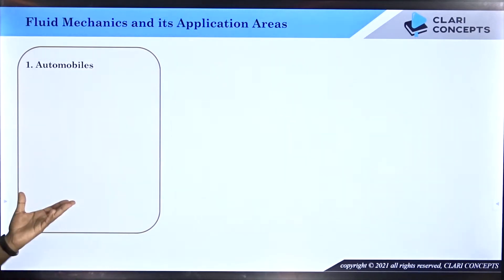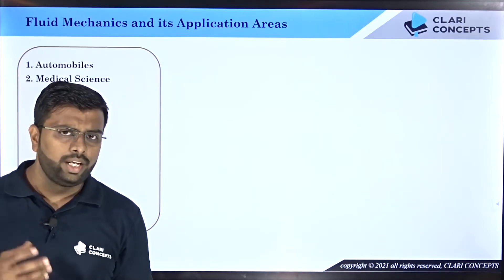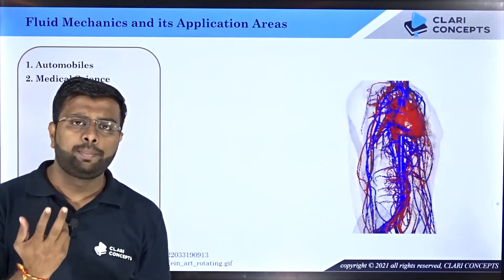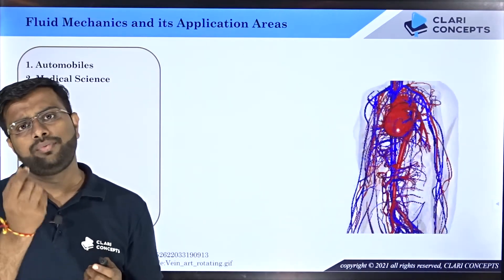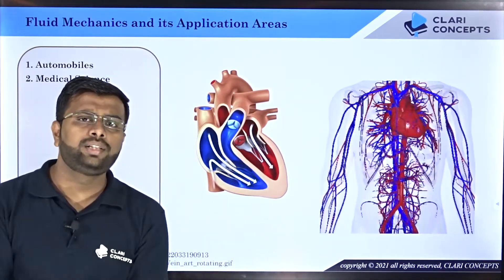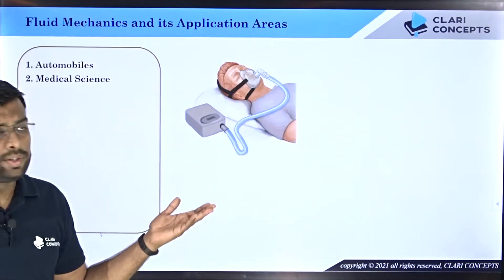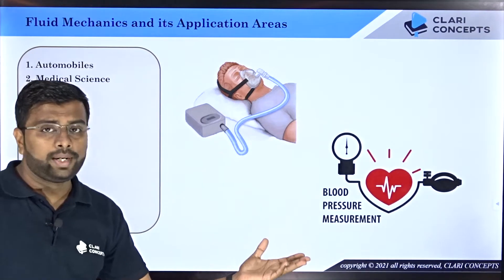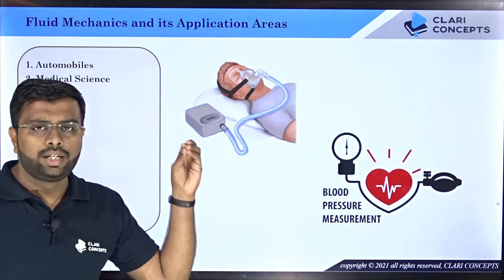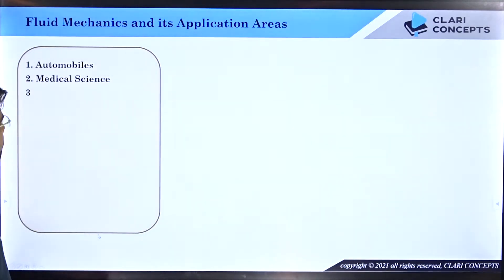The second application area is medical sciences. The closest example is the human body — our heart acts as a pump, and blood flows through arteries and veins in the form of fluid. The function of the heart and the motion of blood itself depicts the importance of fluid mechanics. Medical devices like artificial breathers, ventilators, and blood-measuring equipment are all designed using the principles of fluid mechanics.